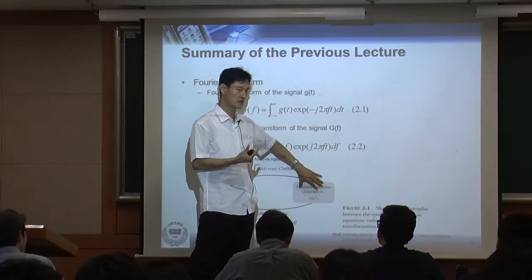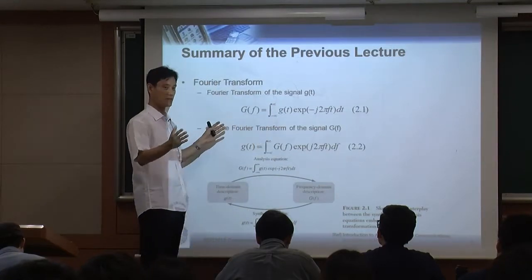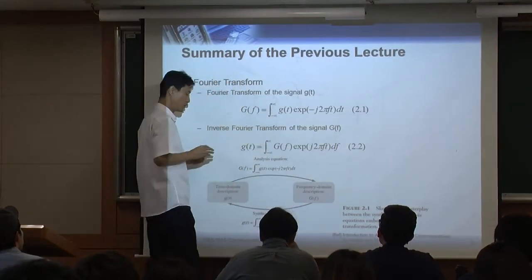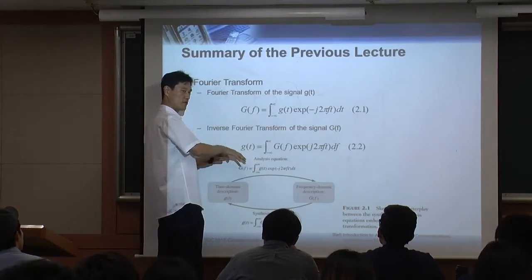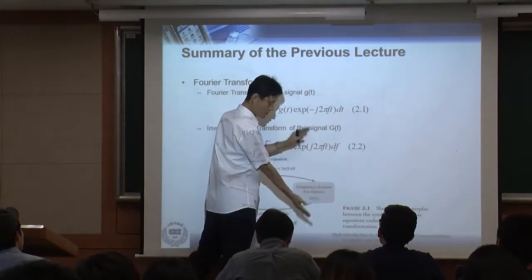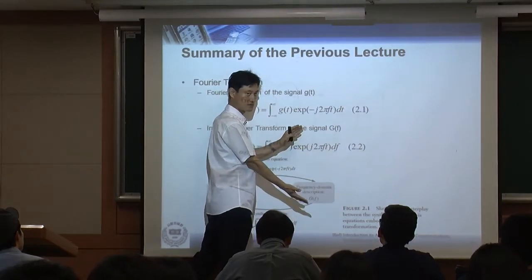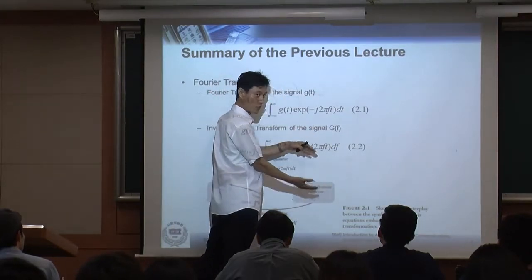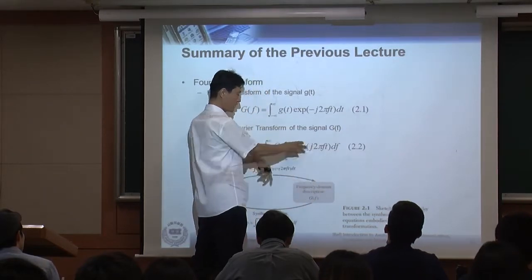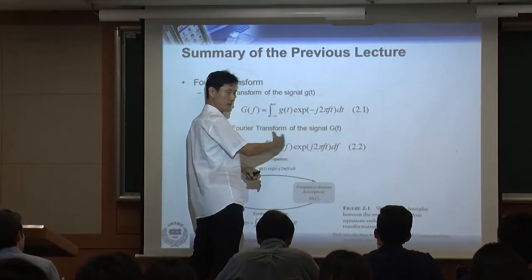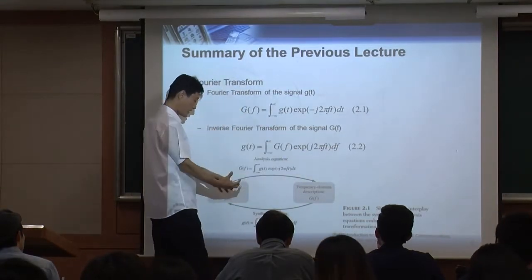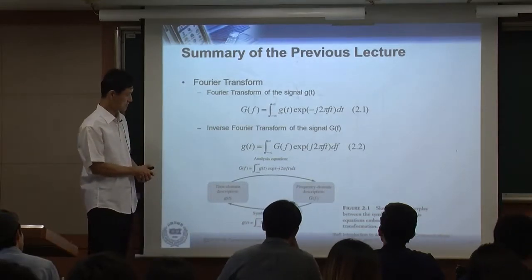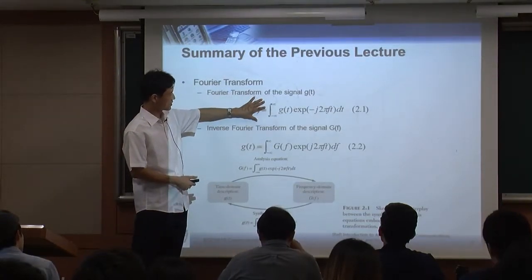Synthesis is putting all those different colors back to white light — synthesis means putting everything together. So the Fourier transform is the analysis: we are interested in looking at the frequency components of a signal, and the Fourier transform analyzes and shows you all the spectrum or frequency components. The inverse Fourier transform synthesizes and puts them back to the original signal.